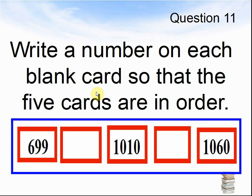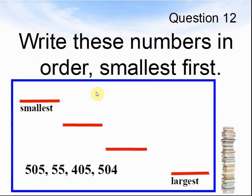Here comes question 12. Write these numbers in order, smallest first. So the smallest number goes here. 505, 55, 405, 504. Pause the video until you are ready for the next question.